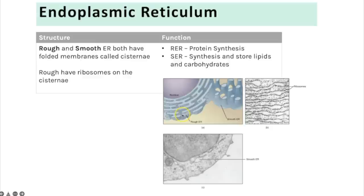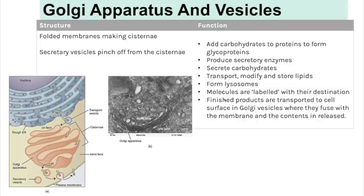The endoplasmic reticulum comes in two forms — smooth and rough. The rough endoplasmic reticulum (RER) has ribosomes on the outside and is where protein synthesis occurs because of those ribosomes. The smooth endoplasmic reticulum (SER) has no ribosomes on the outside; it is where the synthesis and storage of lipids and carbohydrates occurs.